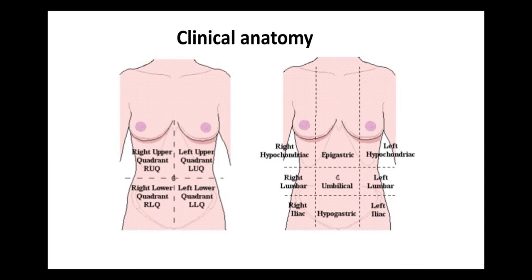Clinical anatomy — when we palpate the abdomen of any patient for observation or identification of any abnormalities inside the abdomen, we first determine the different regions of the abdomen. The abdomen is first divided into nine parts: right hypochondriac, epigastrium, left hypochondriac, right lumbar, umbilicus, left lumbar, right iliac, hypogastric, and left iliac.